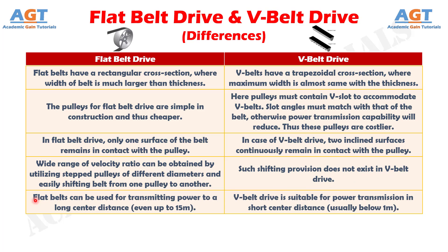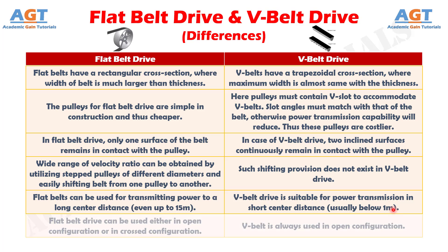Number 5: in flat belt drive, flat belts can be used for transmitting power over a long center distance, even up to 15 meters, whereas V-belt drive is suitable for power transmission in short center distance, usually below 1 meter. Number 6: flat belt drive can be used either in open configuration or in crossed configuration, whereas V-belt is always used in open configuration.